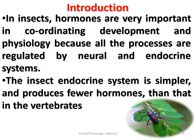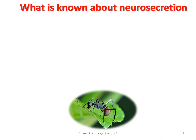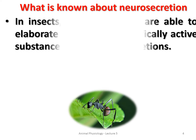In the endocrine system, we have already seen a few glands — the master gland, the pituitary gland, adrenal glands, pancreatic glands, and thyroid glands. In the case of insects, it is very simple and they produce very few hormones. Now, let's see what neurosecretion is.